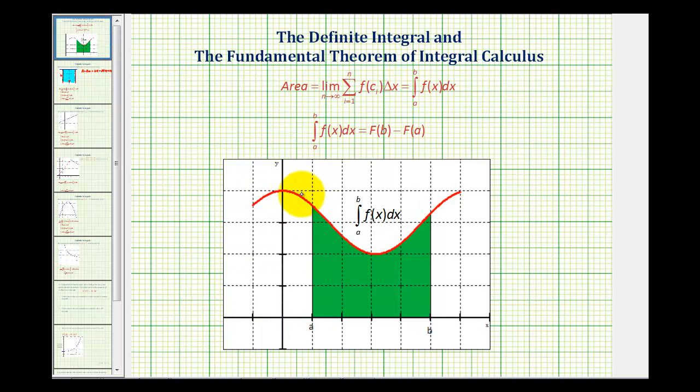We've already learned that if a function is continuous and non-negative on an interval, the area is equal to the limit as n approaches infinity of this sum, and the sum represents the area of very thin rectangles bounded by the function and the x-axis. And this is also equal to the definite integral from a to b of f of x with respect to x.